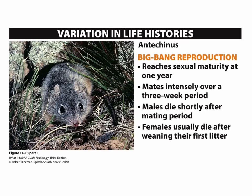One example of Big Bang reproduction is the Antechinus. This type of mouse reaches sexual maturity at about one year of age. They mate intensely for about three weeks, and then the males die shortly after mating. Females will bear their litters, wean them, and then they usually die right after the first litter is gone.